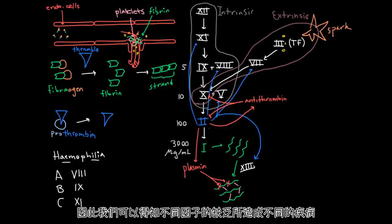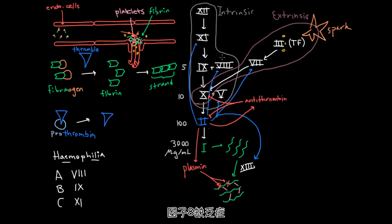And so we can draw those into our clotting cascade over here to see that a factor 8 deficiency will give you hemophilia A, a factor 9 deficiency will give you hemophilia B, whereas a factor 11 deficiency will give you hemophilia C. And so we see that these guys target the intrinsic pathway.